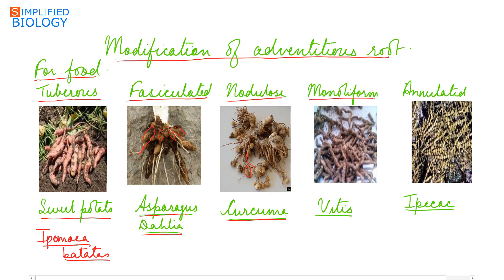Moniliform roots: the roots swell up at intervals and are also referred to as beaded roots. Example: Vitis, that is grapes. Last are annulated roots: the roots swell up in the form of rings. Example: Ipecac, which is a medicinal plant.